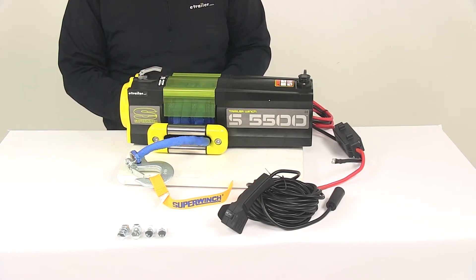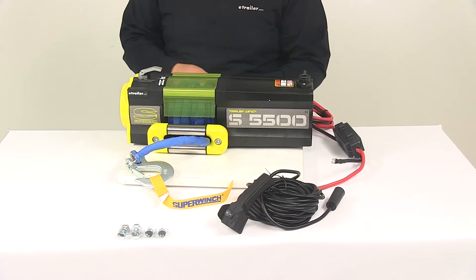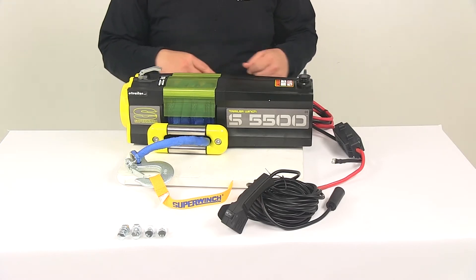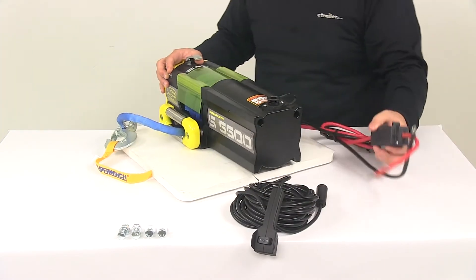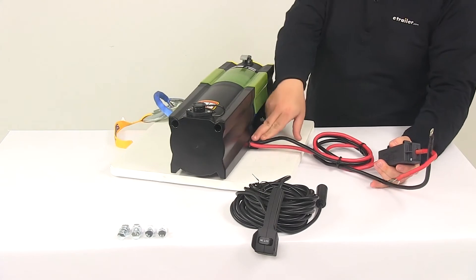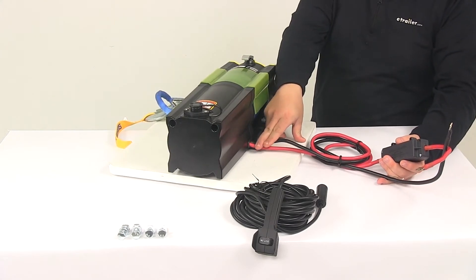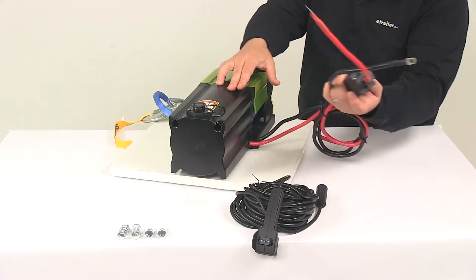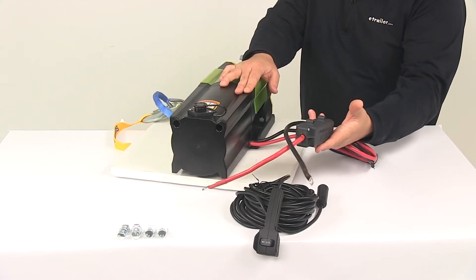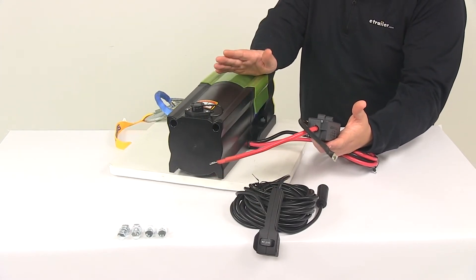The winch comes pre-wired with the circuit breaker pre-installed onto the positive battery cable. We have the positive and negative battery cables coming out of the winch, so it's all pre-wired internally. These wires measure about five feet long, so you have plenty of length to get it connected to a battery.